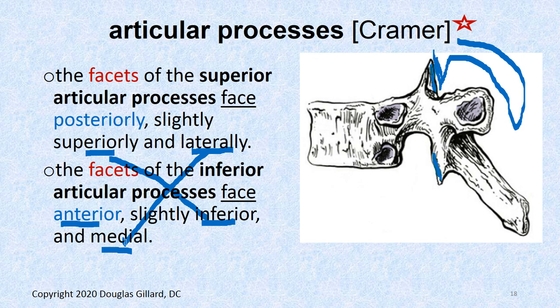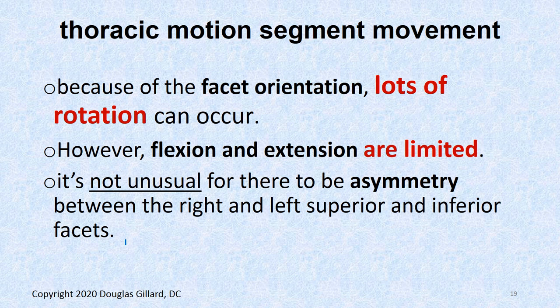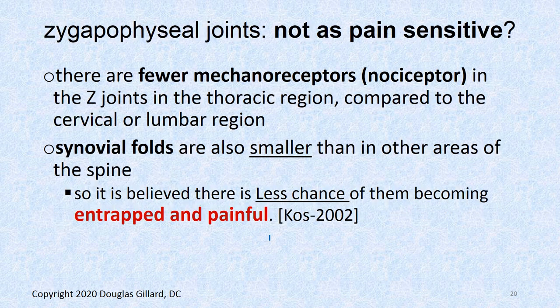Thoracic motion segment: because of the facet orientation — they're very sagittal — you can have a lot of rotation occur here. However, flexion and extension is going to be quite limited. Another weird thing: there's a lot of facet tropism here, more so than any other region of the spine. It's not unusual for one facet to be coronal and the other to be more sagittal.